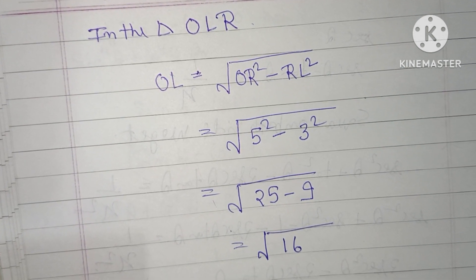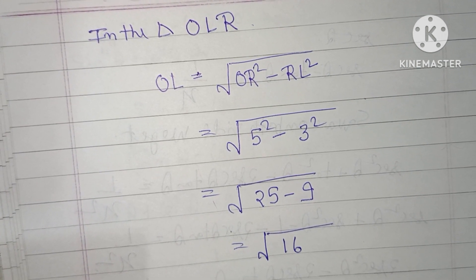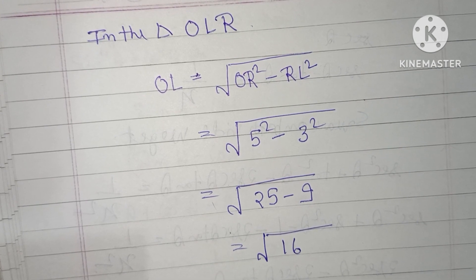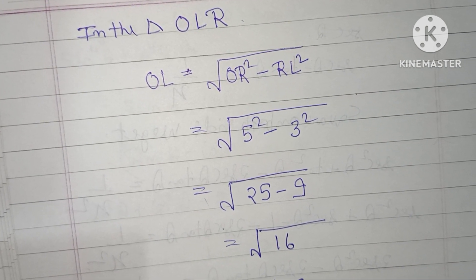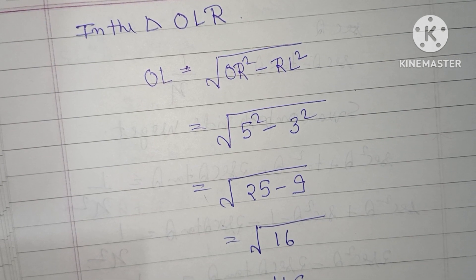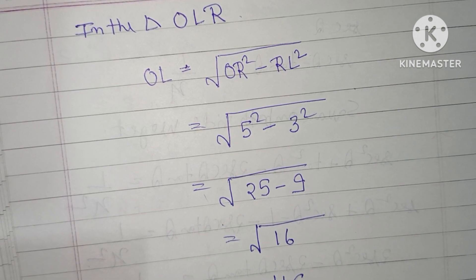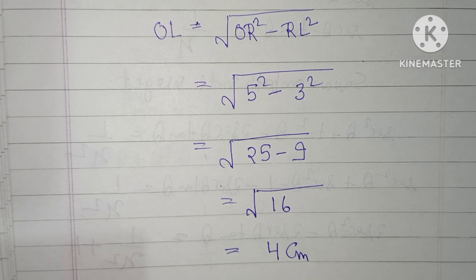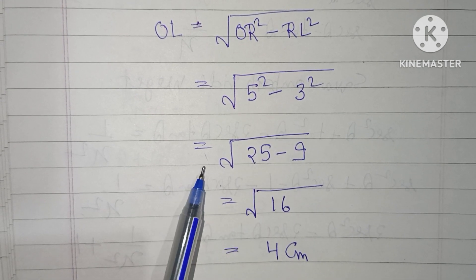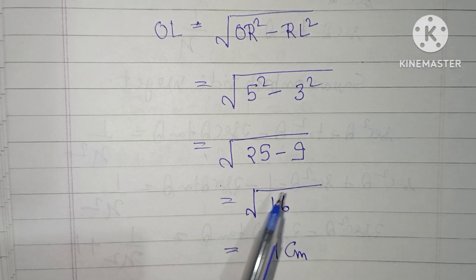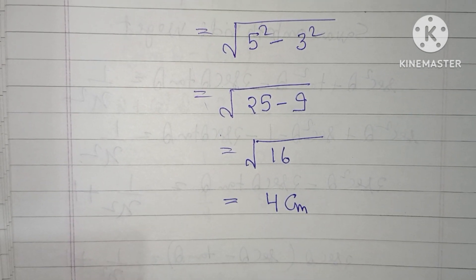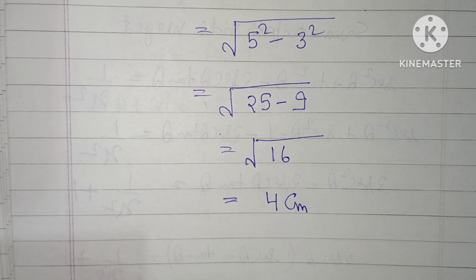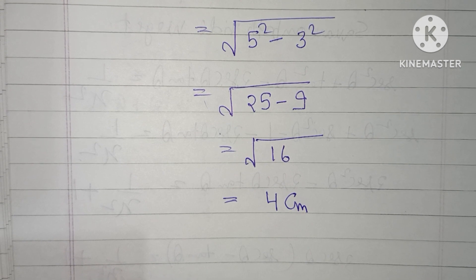Now in triangle OLR, we need to find OL. OL equals square root of OR² minus RL². This equals square root of 5² minus 3², which is square root of 25 minus 9, equals square root of 16, which is 4 meters. This is the length of OL.